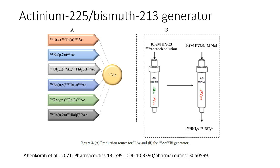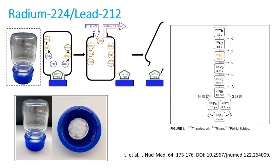For future generators, actinium-225 decaying to bismuth-213 is a research generator being investigated for alpha therapy and could be interesting in the future. Radium-224 to lead-212 is also an area of active development. In this system, radium-224 is converted to a gas, decays, and becomes stuck on glass. The lead-212 is then washed off the glass and used for radio labeling — a simple yet tricky principle to incorporate into clinical use.